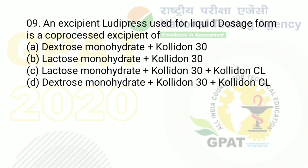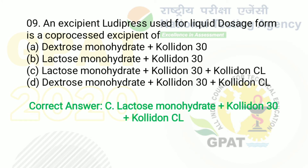The question: the excipient Ludipress used for solid dosage form is a coprocessed excipient of. Option A: dextrose monohydrate plus Kollidon 30. Option B: lactose monohydrate plus Kollidon 30. Option C: lactose monohydrate plus Kollidon 30 plus Kollidon CL. Option D: dextrose monohydrate plus Kollidon 30 plus Kollidon CL. The right answer is option C — lactose monohydrate plus Kollidon 30 plus Kollidon CL.